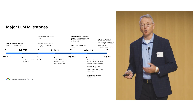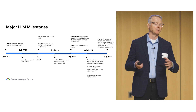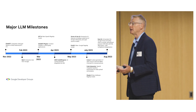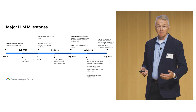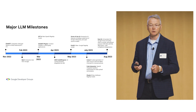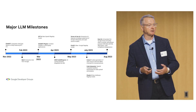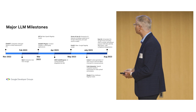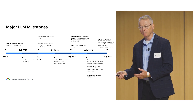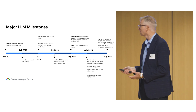In February, Google put out BARD, the consumer chat model — and I'll talk about the distinction between consumer and enterprise. In March, GPT-4, OpenAI's new flagship model, came out along with plugins — the framework OpenAI provides for LLMs to call out to APIs. In April, AWS CodeWhisperer, which had been in preview, became generally available.